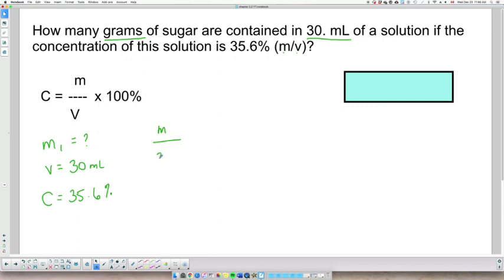I will have mass over 30 mL times 100% is equal to 35.6%. Now if you don't like to solve this, you can rewrite it and put it this way,